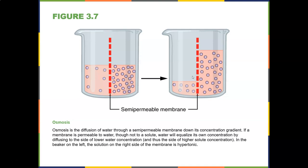Osmosis: here's a semi-permeable membrane. Osmosis is the diffusion of water through a semi-permeable membrane down a concentration gradient — meaning high concentration to low concentration. If a membrane is permeable to water but not to a solute such as salt or sugar, water will equalize its own concentration by diffusing to the side of lower water concentration, and thus the side of higher solute concentration.